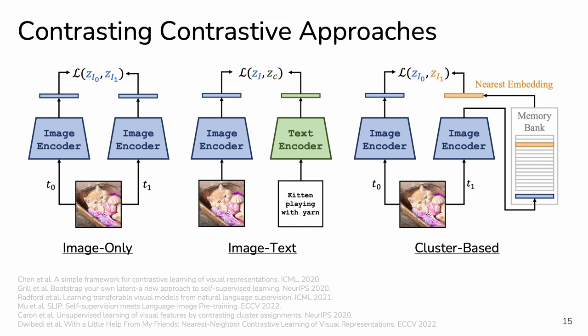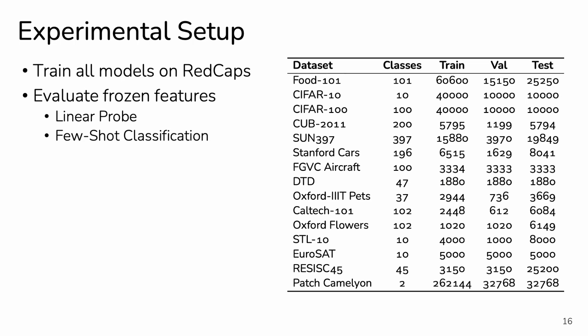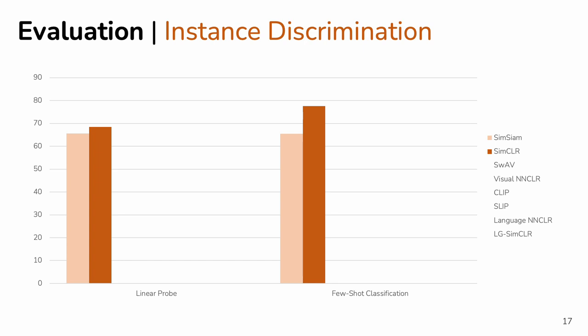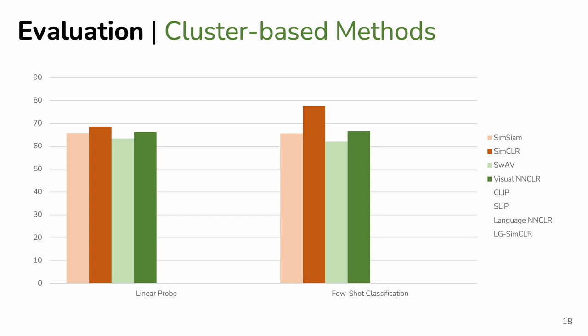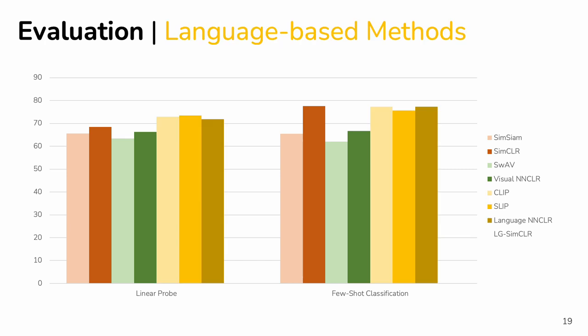The retrieved embedding is often a cluster centroid or the nearest neighbor from previous batches. To properly understand the impact of the different learning signals, we retrain all methods on the same dataset to ensure a fair comparison. We evaluate the frozen backbones using linear probe and few-shot classification on a wide range of downstream datasets. We find that instance discrimination achieves impressive generalization given that it's only learning from the images themselves. Cluster-based methods underperform contrastive methods when trained on RedCaps — surprising, as they often outperform them when trained on ImageNet. We hypothesize that such methods better leverage the curated nature of ImageNet but struggle with less curated datasets. Language provides a boost in performance, especially for linear probe, as it adds semantics absent in other approaches.